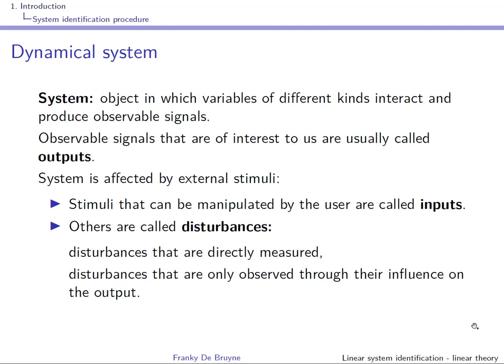We will now turn to the system identification procedure, which yields a dynamical system. A system is an object in which variables of different kinds interact and produce observable signals. The signals that are observable and of interest are called outputs. The system outputs are affected by external stimuli: if the stimuli can be manipulated by the user they are called inputs; if not, they are called disturbances. Disturbances can be measured or unmeasured.